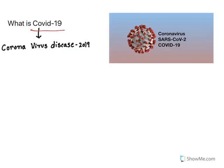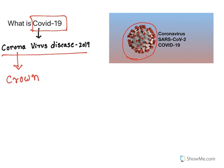COVID-19 means coronavirus disease 2019. The word corona means crown. When you observe this virus under an electron microscope, the surface appears as a crown. Hence it is named as coronavirus.